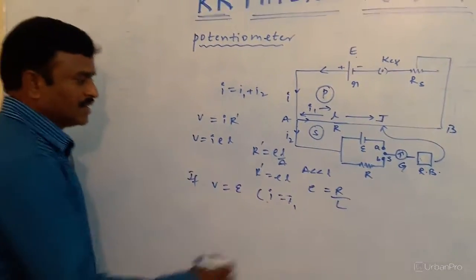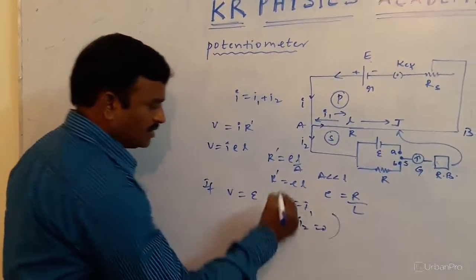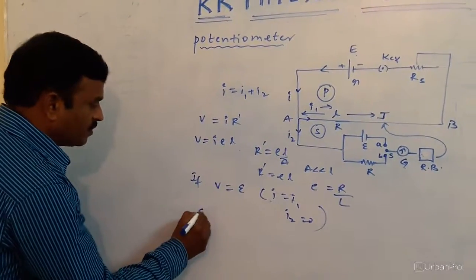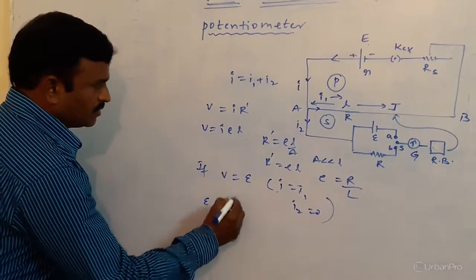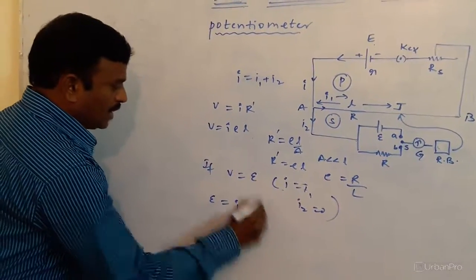As I2 is zero, for that condition, V is equal to E. Therefore, E is equal to I, ρ, L.